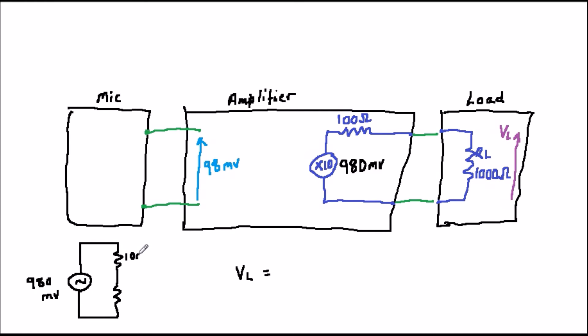Well, the amplifier will produce 98 millivolts times 10, or 980 millivolts, which is 0.98 volts. But how much of this amplified voltage gets into the next circuit?